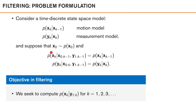Before we start we need to properly define the filtering problem. Remember our discrete time state space models where we have a state vector xk and an observation yk. We describe how the state evolves over time using a known motion model, and how our observations relate to our state vector using a measurement model. We also suppose that we have some prior distribution that is known to us, and that the state at time k is conditionally independent on all previous measurements and past states if we condition on xk minus 1. All the past states and all the past measurements do not include any more information about xk than what the previous state does.